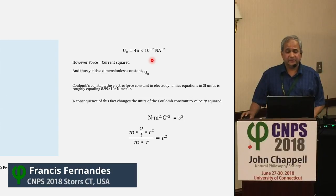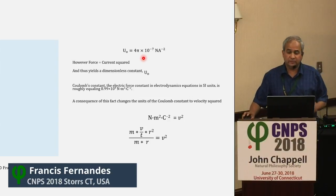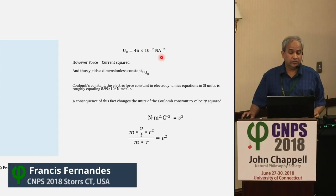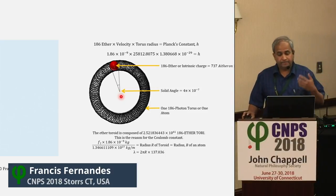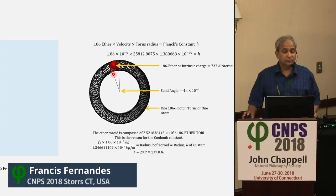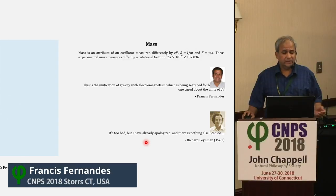Magnetic permeability is 4π times 10 to the power minus 7 newtons per amp squared. If amp squared — current squared — equals force, these cancel out and you get a dimensionless mu-naught. The reason I use all of this is because it leads to structure. N per ammeter squared is dimensionless because current squared equals force. The angle depicted here is a solid angle through which vortices and magnetic fields are generated as material particles move around in the toroid. Feynman said 'it's too bad, I have apologized, there's nothing else I can do' — this is about the units of energy.